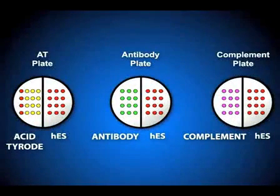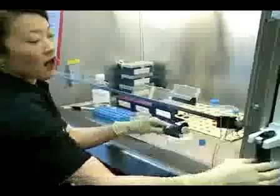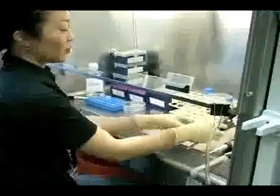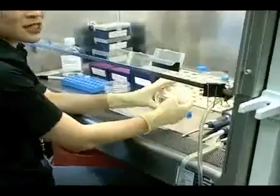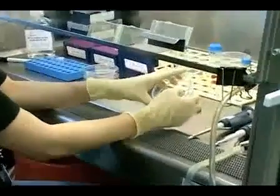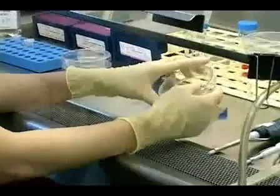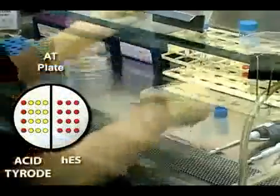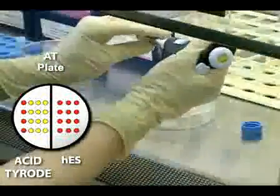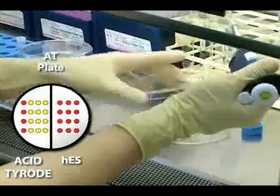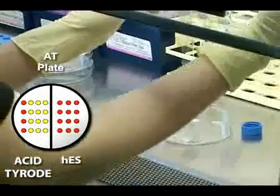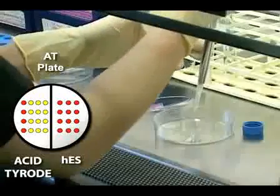To begin, we want to prepare three plates. The first plate is for acid tyrodes, which we use to remove the zona pellucida. The second and third plates are for immunosurgery. I'll first begin by generating the plate where we will place the acid tyrodes drops and human embryonic stem cell derivation media drops. Prepare three drops of acid tyrodes on the left side of the plate, and on the right side of the plate, prepare three drops of human NDS culture media.